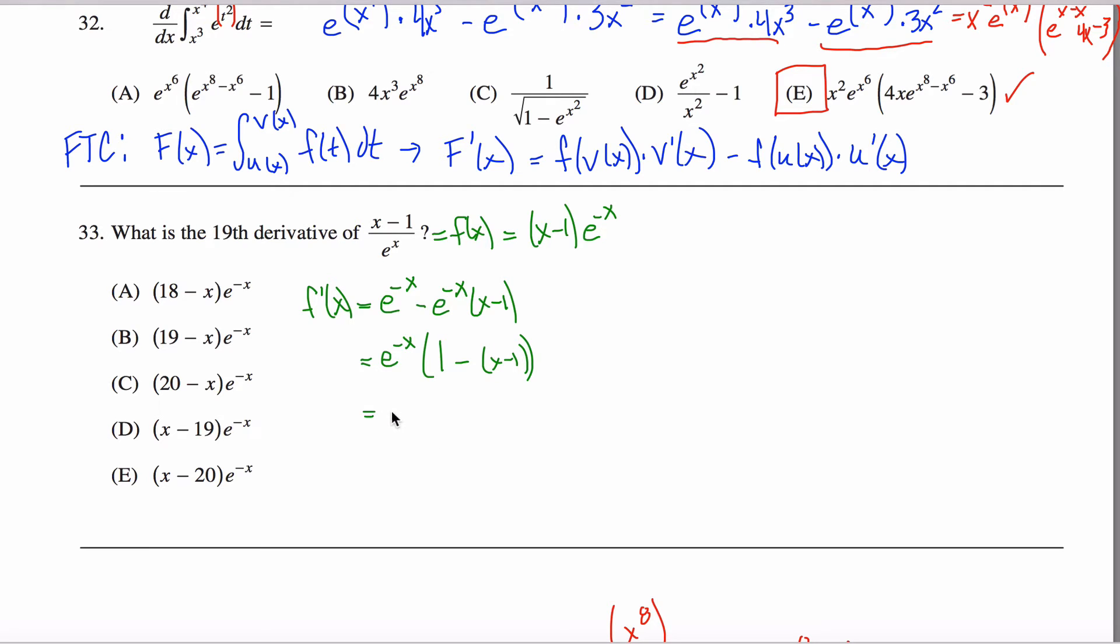In other words, I would have a negative x and 1 minus negative 1 so I'd end up with 2. e to the negative x times 2 minus x. So there's the first derivative.